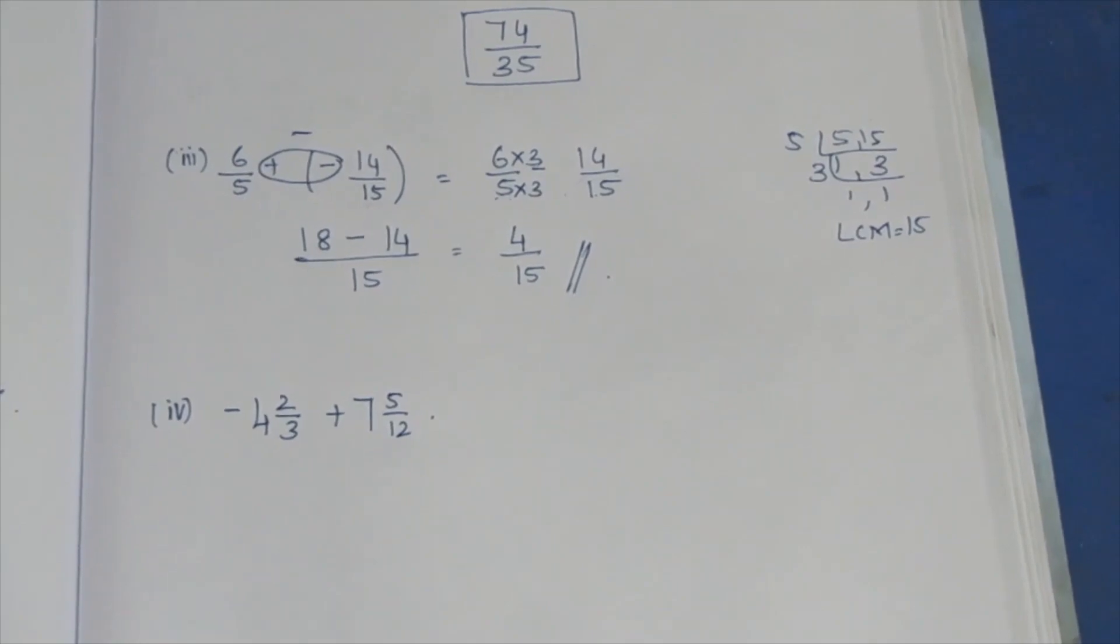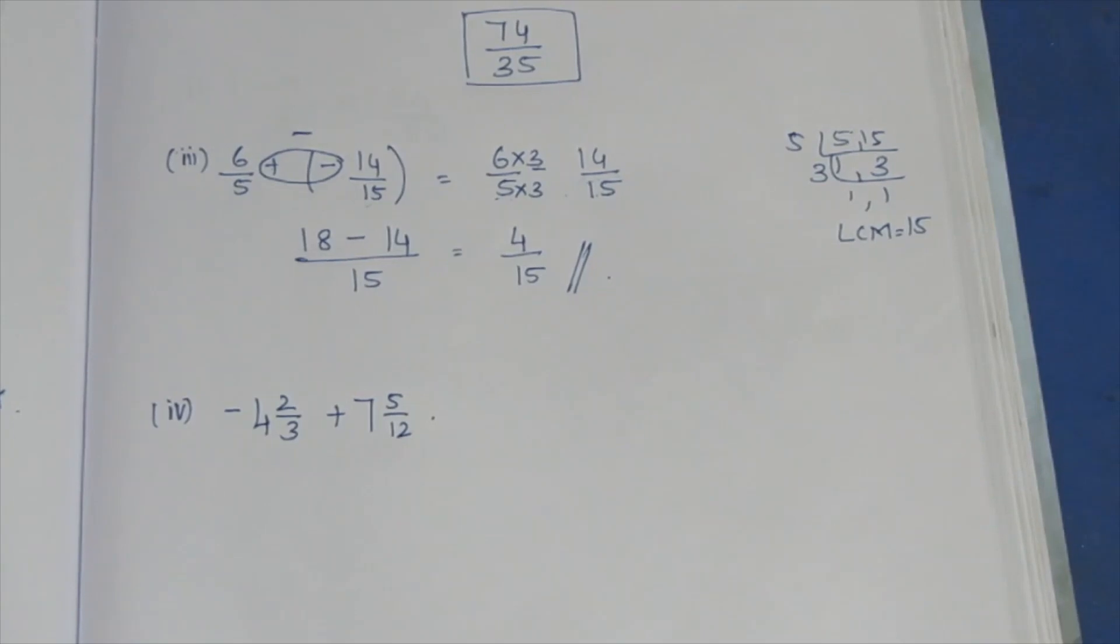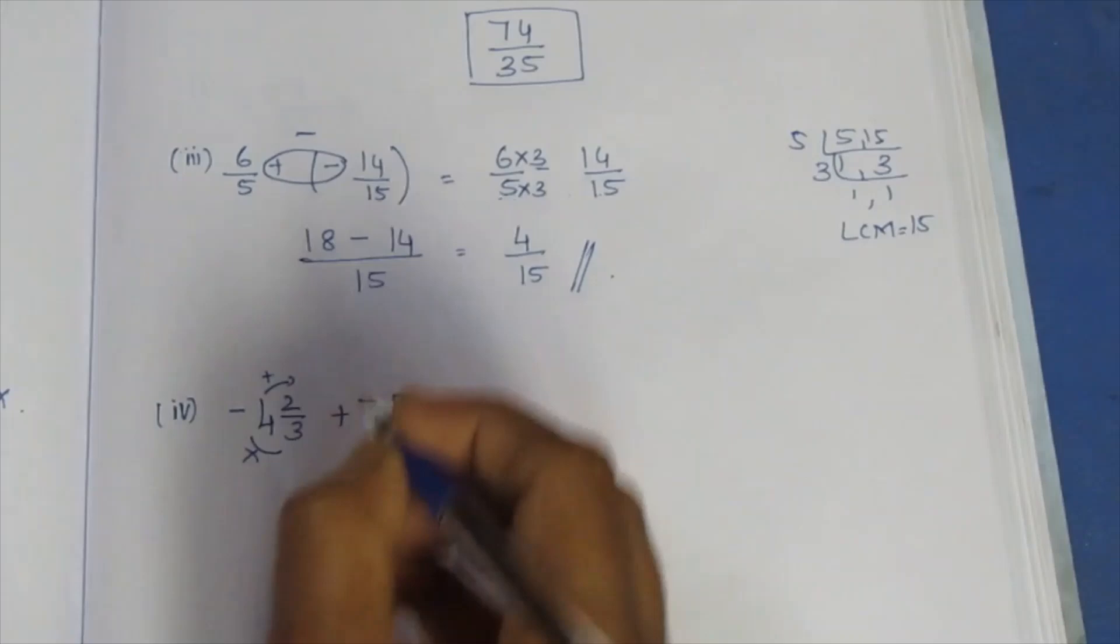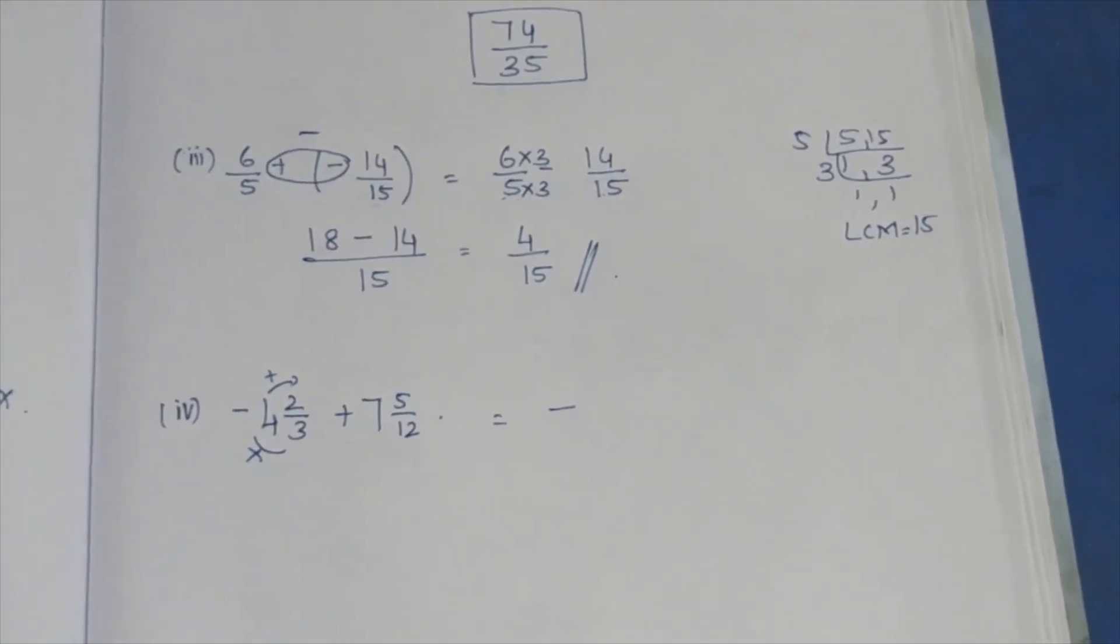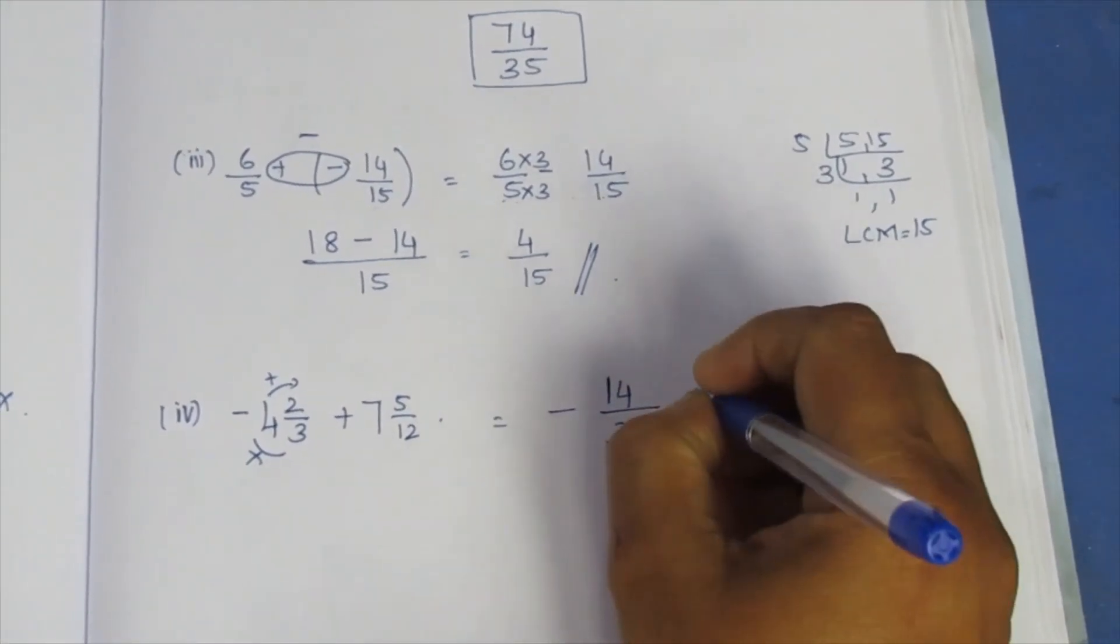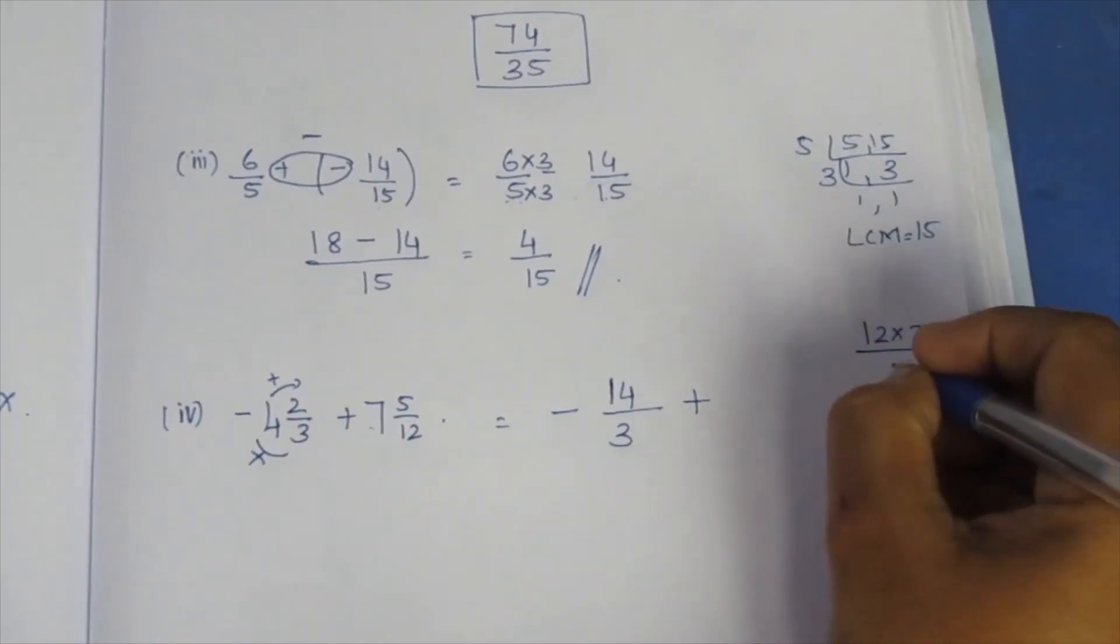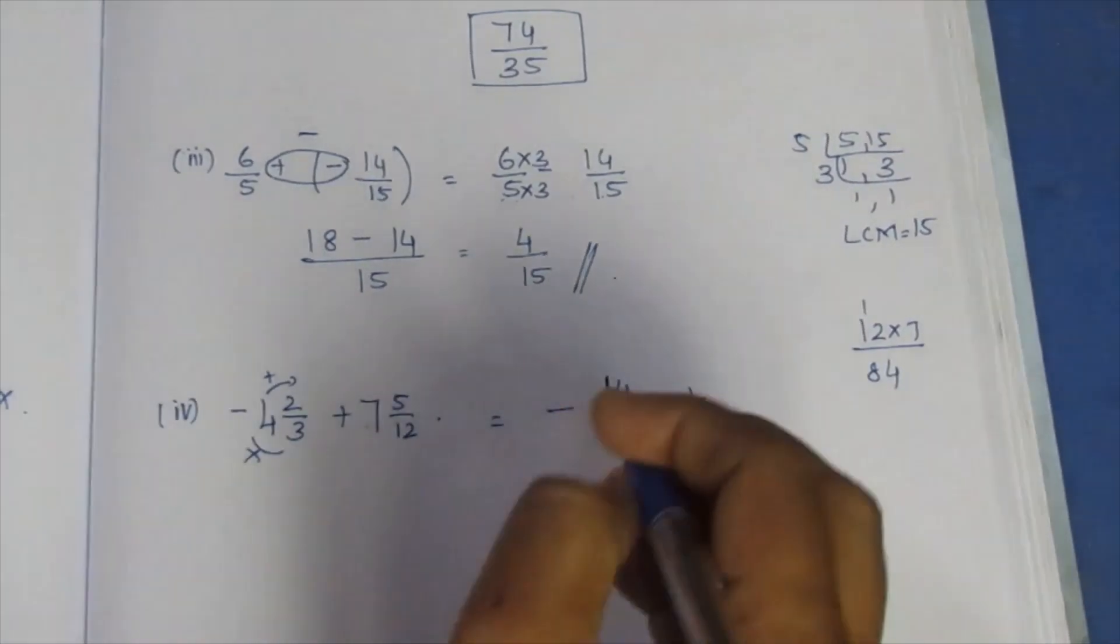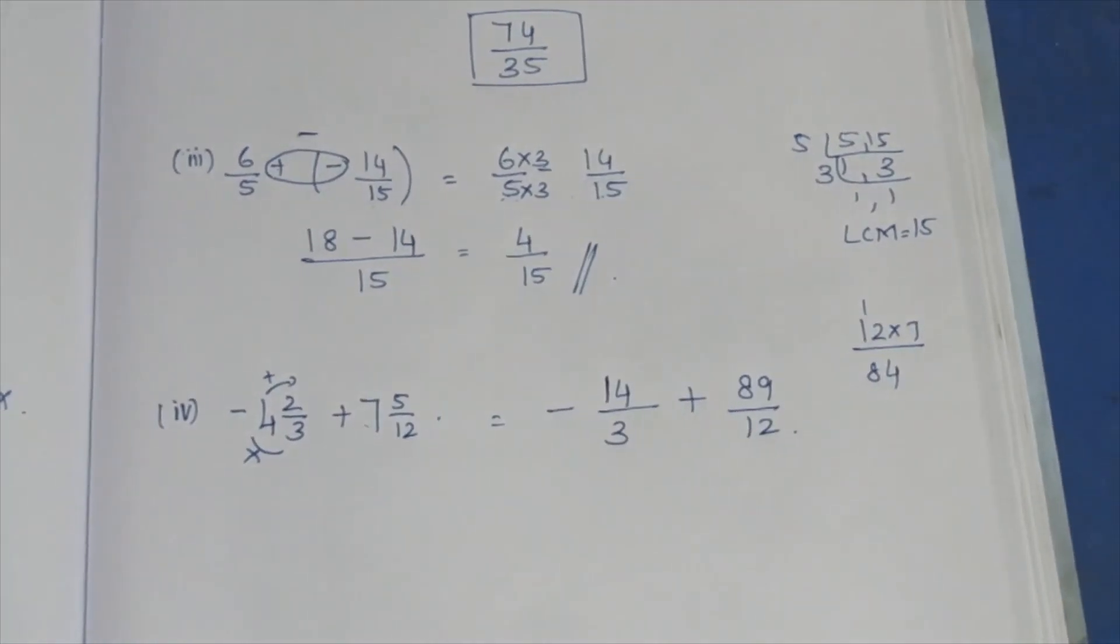Next time, mixed fraction to improper. Multiply and add the answer. If there is a sign, add the number and multiply. 4 times 3 is 12. 12 plus 2 is 14. 14 by 3. Plus 12 times 7 is 84. 84 plus 5, that means 89. 89 by 12.